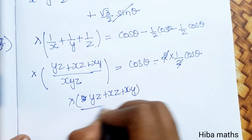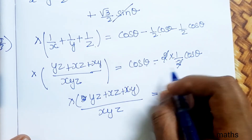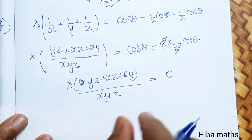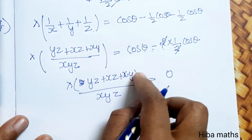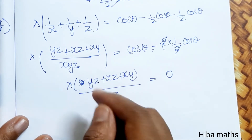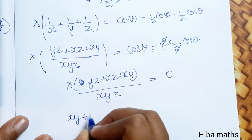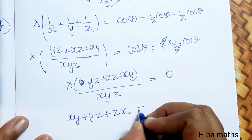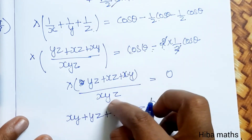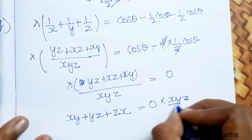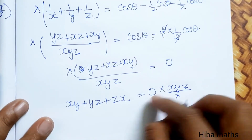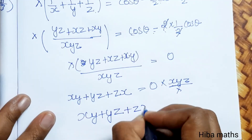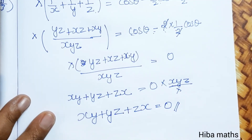Therefore: λ · (yz + xz + xy) / xyz = 0. Dividing both sides by λ/xyz (multiplying by the reciprocal), and since 0 times anything is 0, we get: xy + yz + zx = 0. This completes the proof.